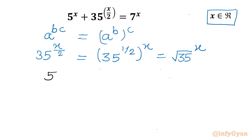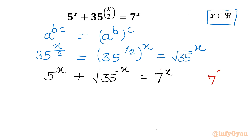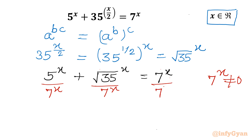So I can write 5^x + (√35)^x = 7^x. Now we know that 7^x is an exponential function — it cannot be equal to 0. So we can divide both sides by 7^x. The right-hand side will become 1.